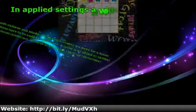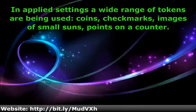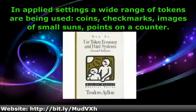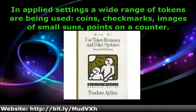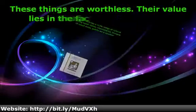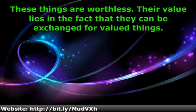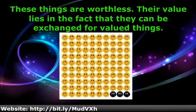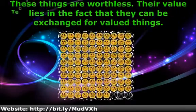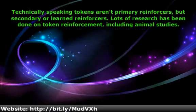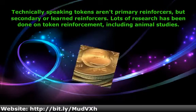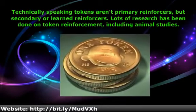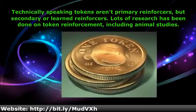In applied settings a wide range of tokens are being used: coins, check marks, images of small sums, points on a counter. These things are worthless — their value lies in the fact that they can be exchanged for valued things. Technically speaking, tokens aren't primary reinforcers, but secondary or learned reinforcers. Lots of research has been done on token reinforcement, including animal studies.